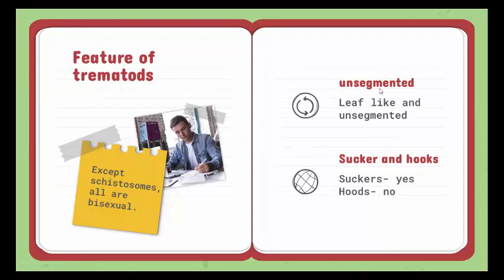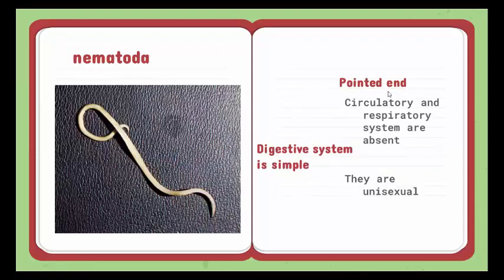Trematodes are unsegmented, leaf-like, and they have no hooks — they do have suckers. Nematodes have pointed ends; their circulatory and respiratory systems are absent, and the digestive system is quite simple. They are unisexual. This is a short overview of veterinary helminthology. Hope you enjoyed this video — please keep subscribing, liking, and supporting. Thank you so much.